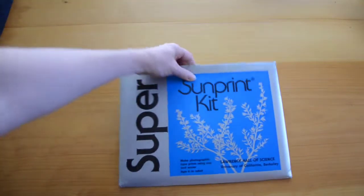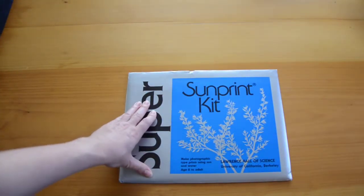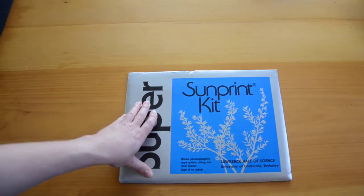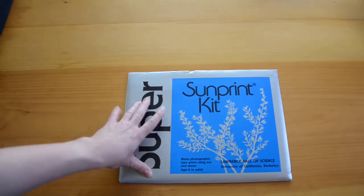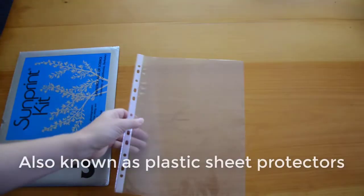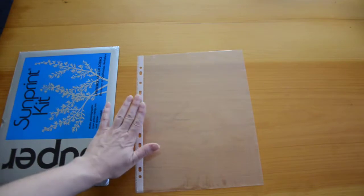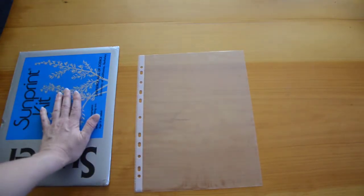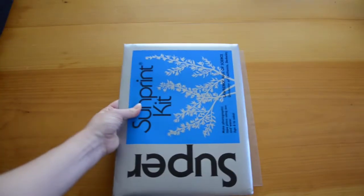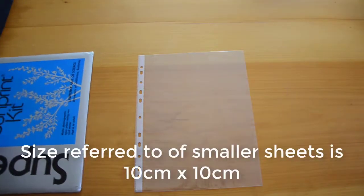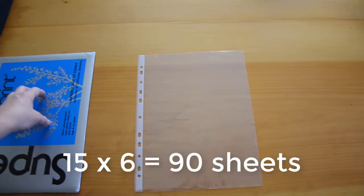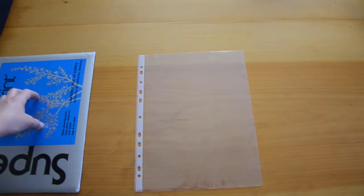To do this activity we're going to need a few things. First up we're going to need our Sunprint kit. I've already explained this in another video so you're welcome to go and check that out. The second thing we're going to need is some plastic transparency sheets. These are the ones you would use in a force cap binder and you'll need one of these for every person who's going to be doing the activity.